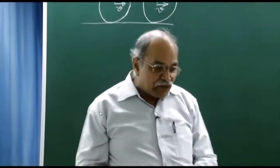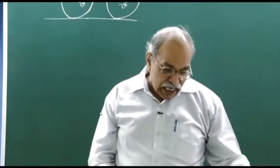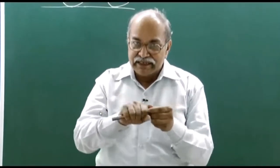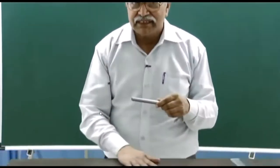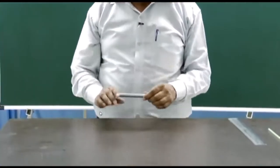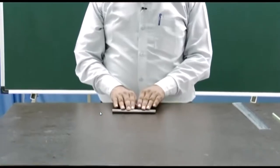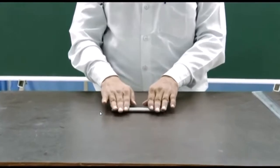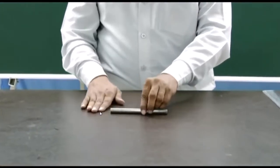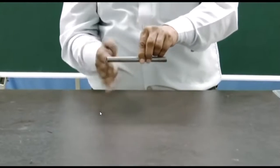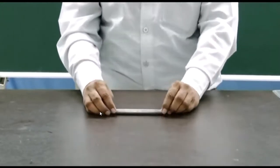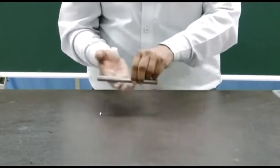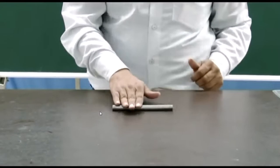Now let us do an experiment on rolling. I have a cylindrical tube. The surface is cylindrical and the table surface is horizontal and flat. I can put it here and roll this tube in such a fashion that there is no slipping between the table surface and the surface of the tube in contact. It does not rub — it gently goes and the lower portion remains at rest. This is rolling.